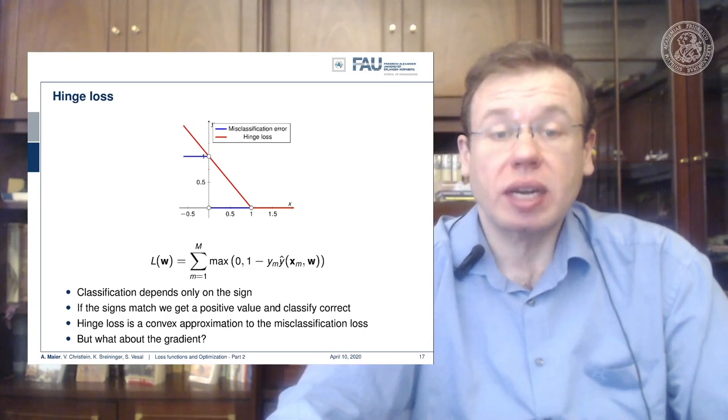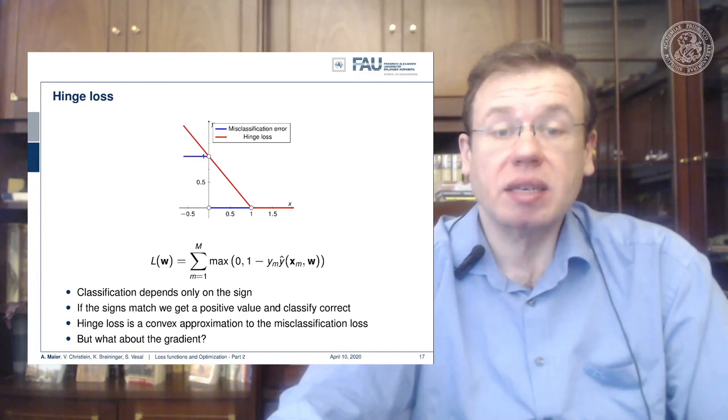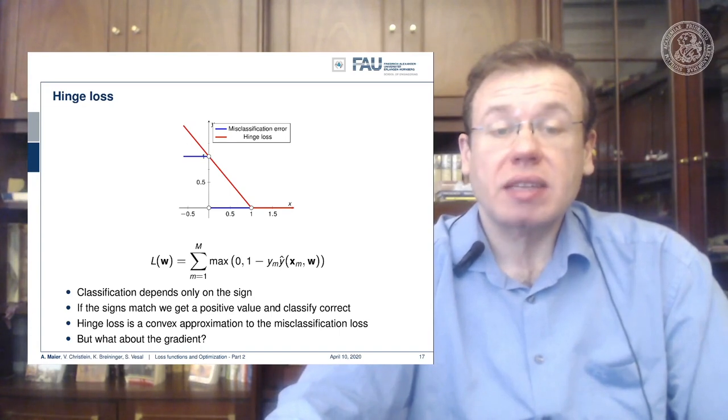Here you can see that we will have the same constraint if we have opposite sides of the boundary. This term will be negative, and by the sign it will of course be flipped so that we end up having large values for a high number of misclassifications.